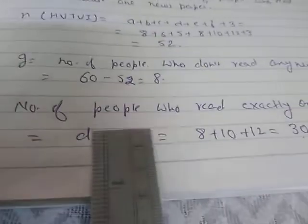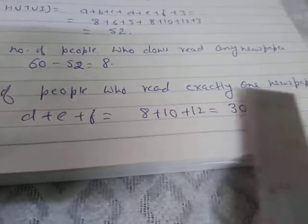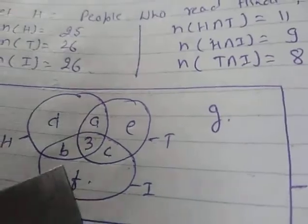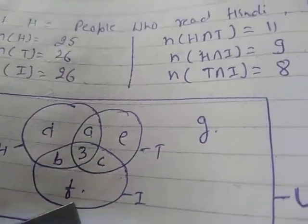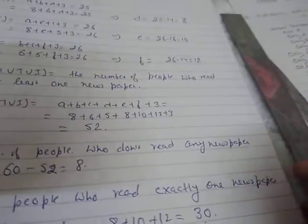The number of people who read exactly one newspaper corresponds to regions d, e, and f only. That sum equals 30.